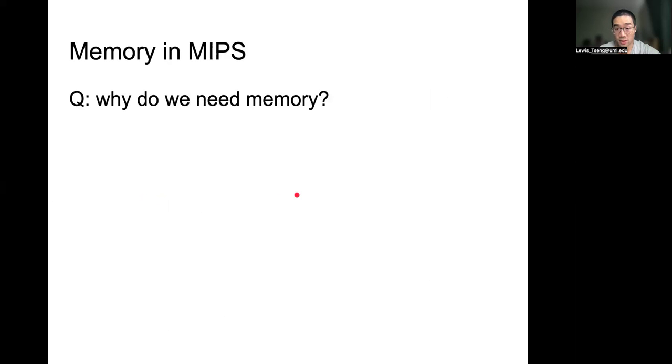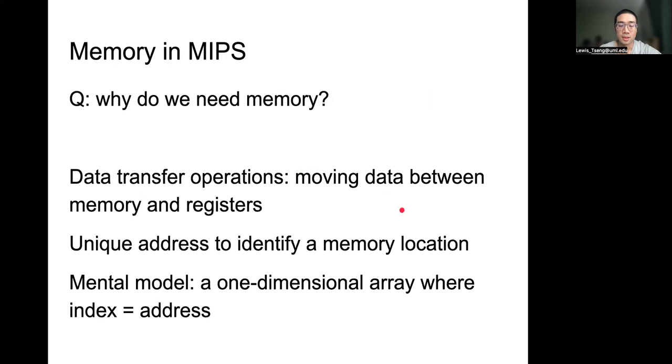We have register and another important concept or component is called memory. Here you want to ask: what's the difference between memory and register, and why do we even need to have a memory? In terms of memory, certain computation can only be done on register. So we need to have data transfer operation to move data between memory and register. Remember that MIPS uses a unique address to identify a memory location and uses byte address.